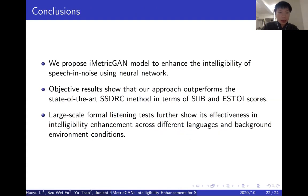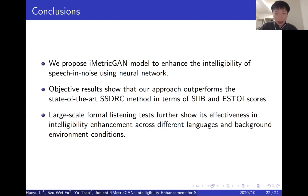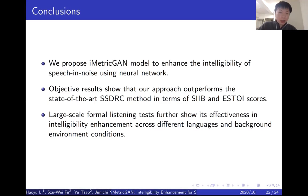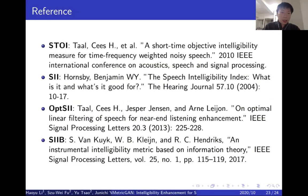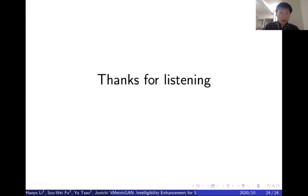In conclusion, in this work we propose the IMetriGAN model to enhance the intelligibility of speech in noise using a neural network. Objective results show that our approach outperforms the state-of-the-art SSDRC method in terms of SRIB and SSTOi scores. Large-scale formal listening tests show its effectiveness in intelligibility enhancement across different languages and background environment conditions. Here are some references, and that's all. Thanks for listening.